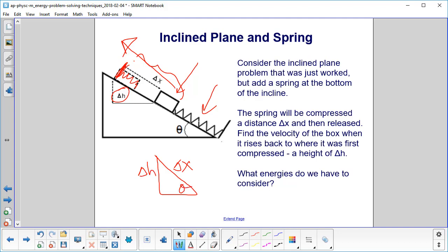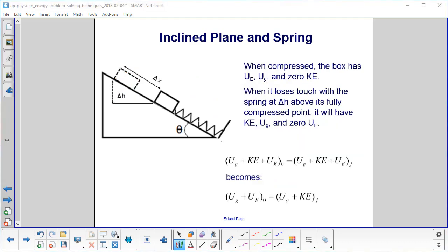So what energies do we have to consider now? When compressed, the box has elastic potential energy, gravitational potential energy, and zero kinetic. When it loses touch with the spring at delta h above its fully compressed point, it will have kinetic energy, gravitational potential energy, and zero elastic potential energy. So our conservation of TME equation simply becomes this one right here.